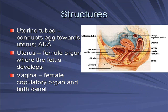There's also a structure called the uterine tubes, and these are what conduct the egg toward the uterus from the ovaries. They're also known by a more common name — fallopian tubes. And in the fallopian tubes, or the uterine tubes, that's where fertilization actually occurs.